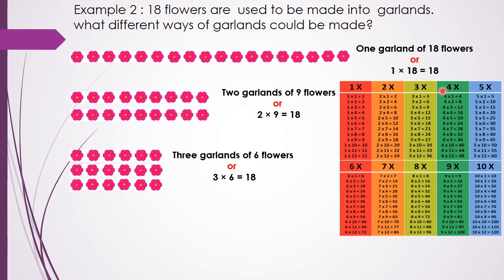In the 4 times table, we do not find 18 as the product. In the 5 times table also we could not find it. In the 6 times table, 6 threes are 18 — but we already took 3 sixes are 18, so it is the same. You can visualize it the other way: 6 garlands with 3 flowers each. When we multiply numbers in any order, 3 and 6 are the factors of 18.